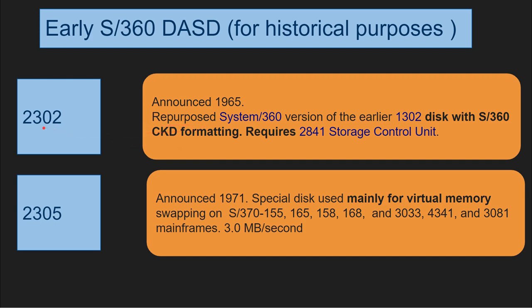The 2302 is already a disk some people may remember — it was before my time. Then about five or six years later they announced the 2305, a special disk used only for swapping because it had very fast I/O — three megabytes per second. It was an adaptation used as a swapping device for the S370-155, 165, 158, and 168 mainframes.